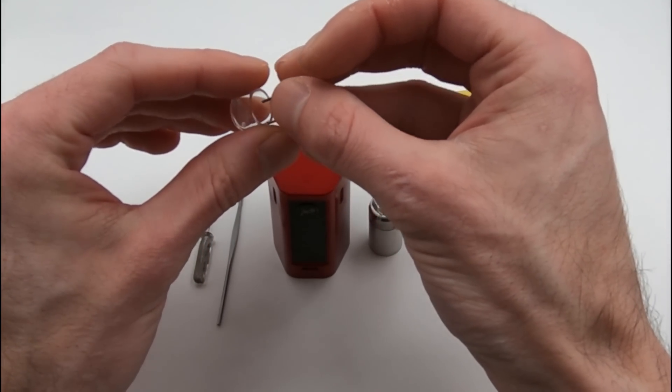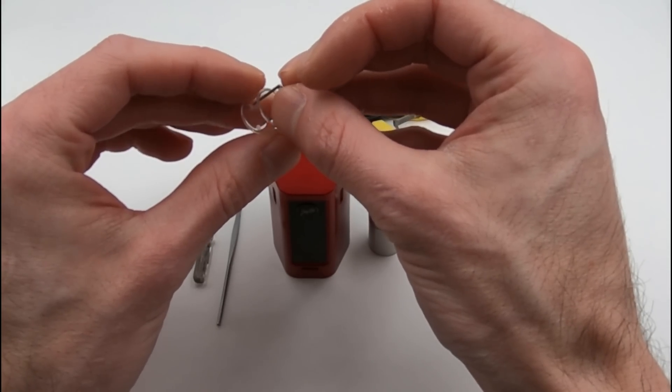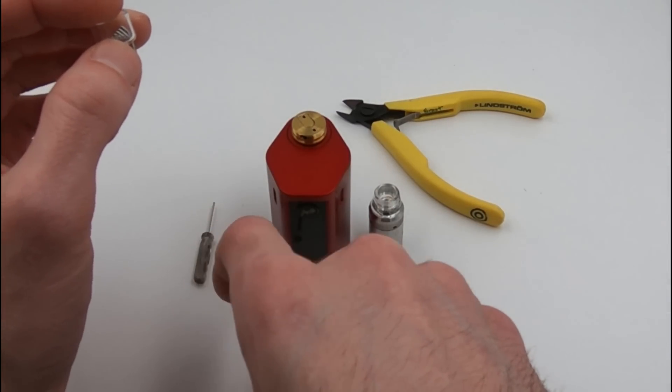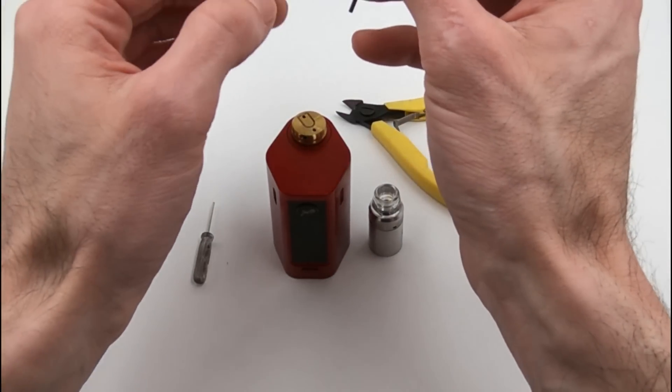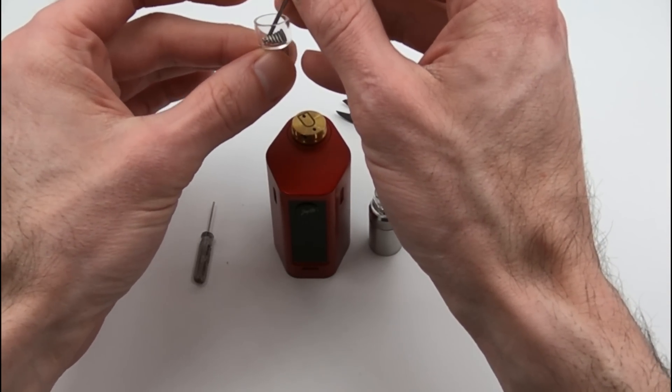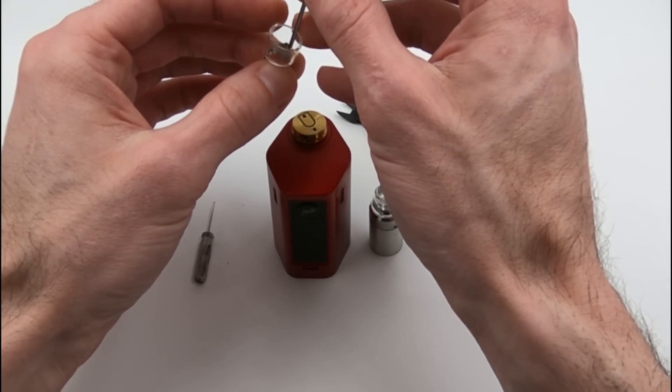There have been some people that thought they were having problems due to oil under the cup or this or that, but in large part if you're having a problem with your resistance or your temperature control there's a 99% chance that either one of your screws is loose or your 510 pin is loose, but more than likely